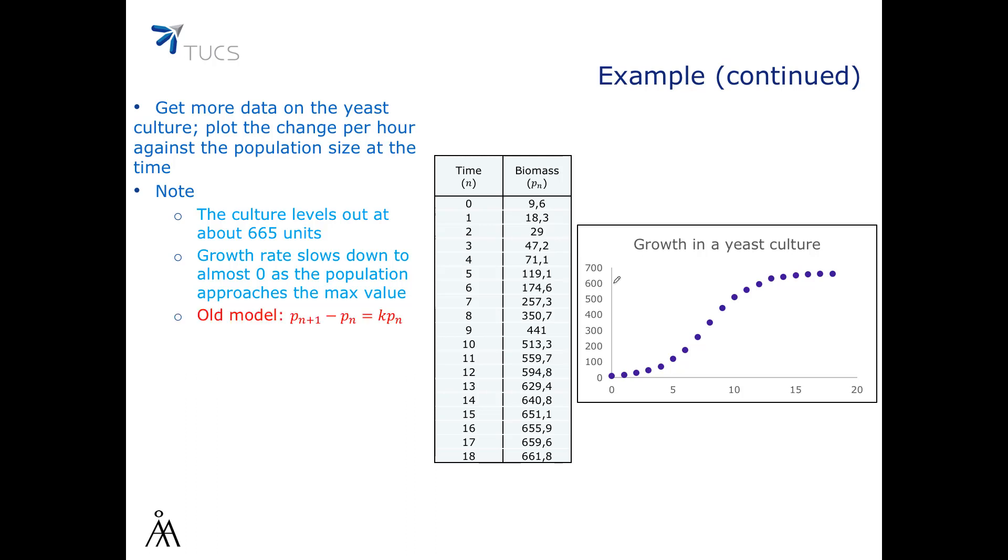Remember that our old model was P(n+1) minus P(n) equals K times P(n), which was unsatisfactory because it predicted infinite growth. We would like to build a new model with just a small change in the old model. For example, we could replace K in the old model with a simple function that approaches 0 as P(n) approaches the maximum value. And such a function could simply be R times (665 minus P(n)), where we include a constant R just to give us some flexibility when fitting the model to the data. So the new model will be P(n+1) minus P(n) equals R times (665 minus P(n)) times P(n).